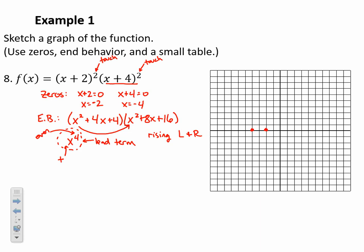For the end behavior, multiplying first terms gives x to the fourth as the leading term — positive with even degree, so the graph rises left and right. Using a table: at x = −3, the output is (−1)²·(1)² = 1, so the graph passes through (−3, 1). At x = 0, the output is 2²·4² = 64, confirming the graph climbs steeply away from the zeros.